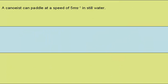Now to look at a simple problem involving velocity, the vector of motion. A canoeist can paddle at a speed of 5 meters per second in still water, but here the water velocity is 2 meters per second to the right.